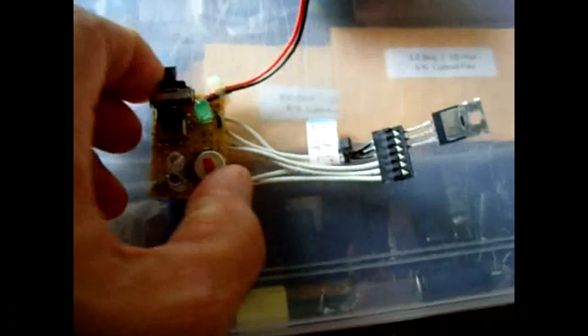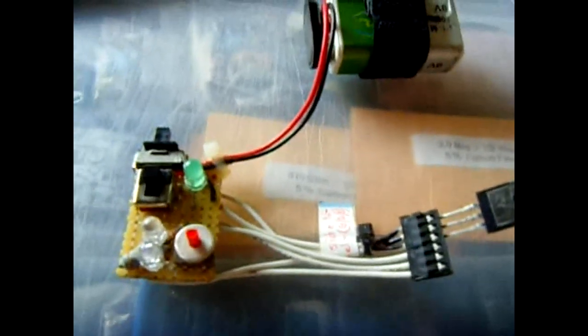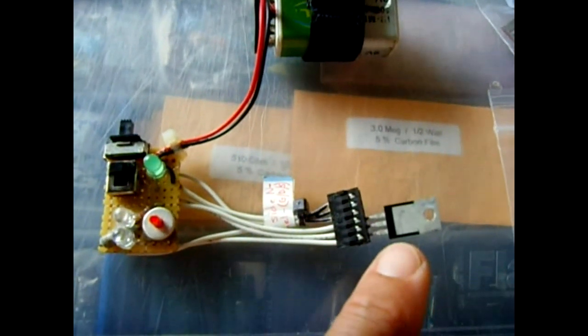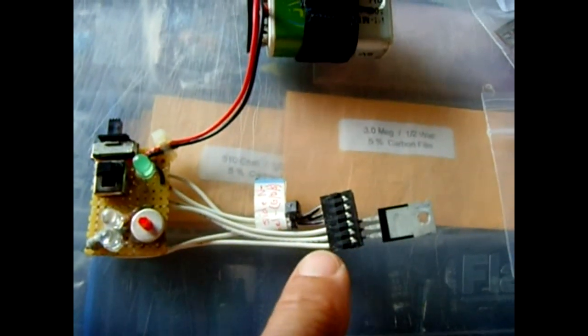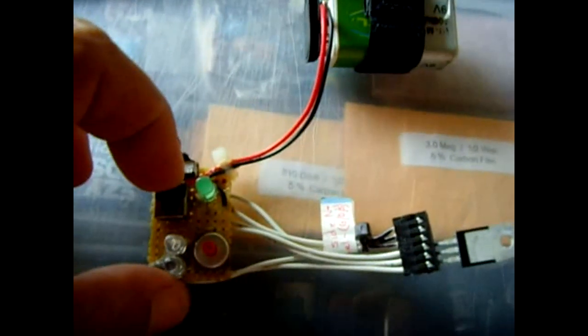So now I'm going to shut it off and I'm going to switch over to the P-channel. Okay. Now the P-channel is installed. Gate Drain Source, same way, in the other three slots. I'm going to switch over to the P-channel testing, which is that side.